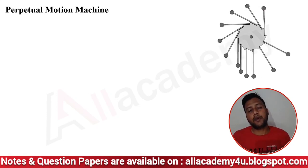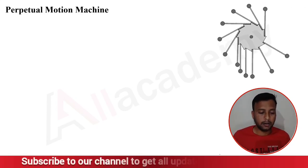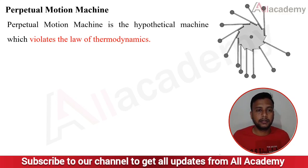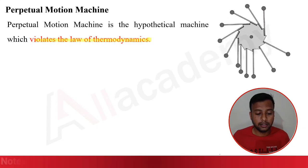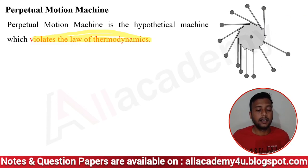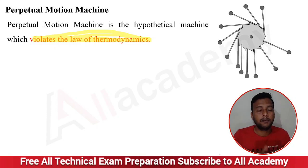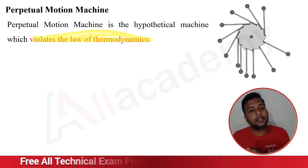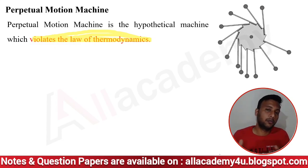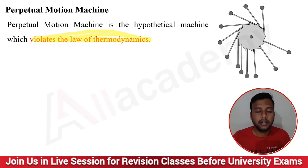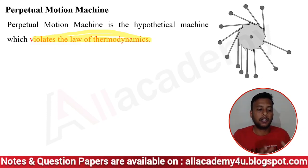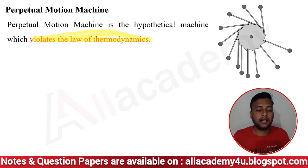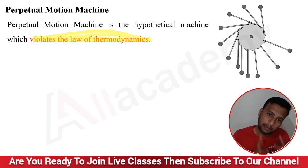The next very important topic in today's session is the perpetual motion machine. A perpetual motion machine is a hypothetical machine which violates the laws of thermodynamics. In this context, perpetual motion of the first kind violates the first law of thermodynamics, while perpetual motion of the second kind violates the second law — we will discuss the second kind when studying the second law.